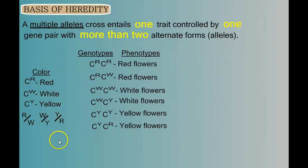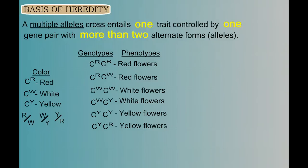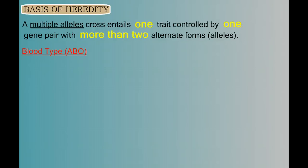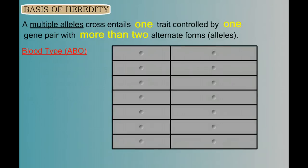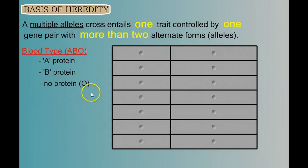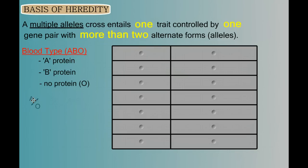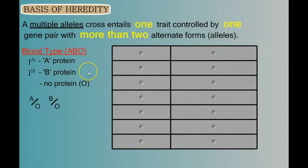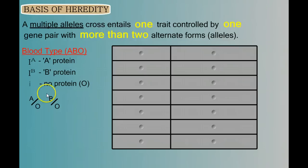Let's look at a real example of multiple alleles with blood type. Human blood cells have protein markers on their surface, and the type of protein is determined by a pair of genes that comes in three different forms: the A allele, the B allele, and the O allele. The A allele codes for the A version of the protein, the B allele codes for the B version, and the O allele codes for no protein. It turns out that A is dominant to O, so we designate the A allele as a capital I with a superscript A. The B allele is also dominant to O, so it gets a capital I with a superscript B. Since O is recessive to both A and B, we give it a lowercase i.